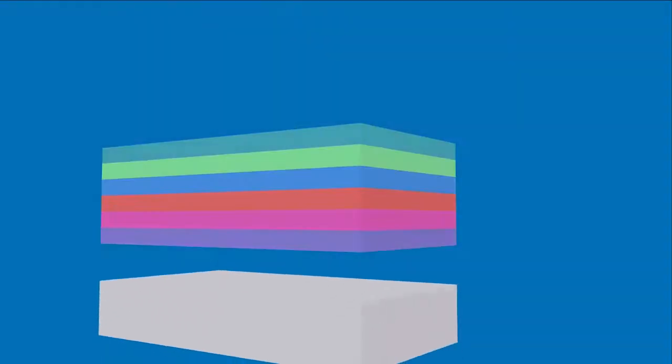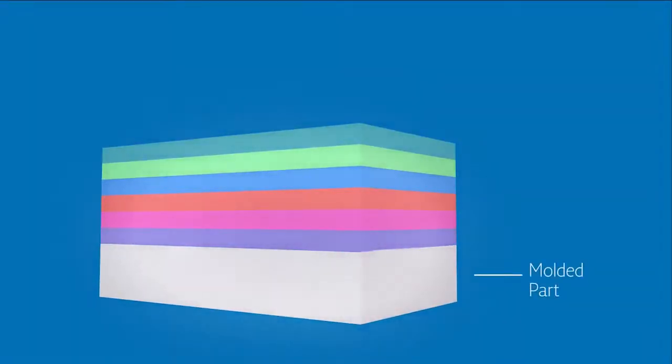Then the mold closes and molten resin is injected via the core side of the mold. The heat of the resin activates the adhesive layer printed on the film, allowing the decorative image to release off the carrier film and transfer to the molded part's surface.